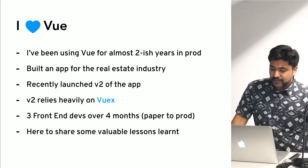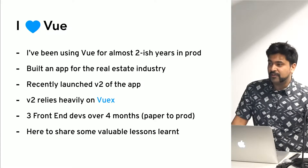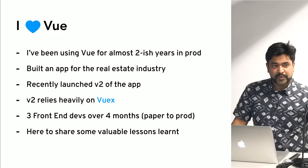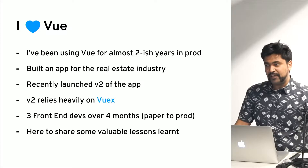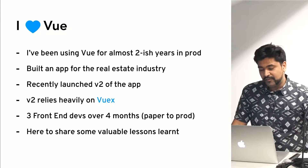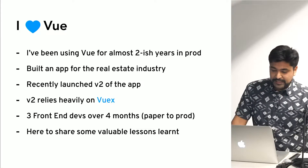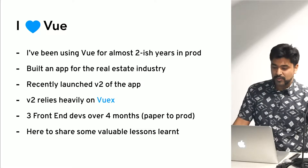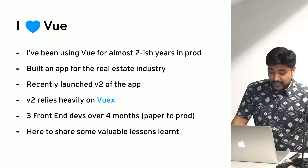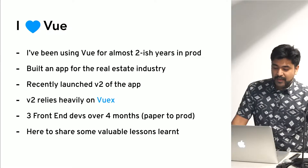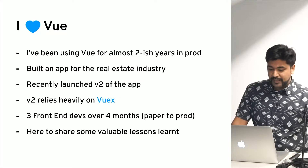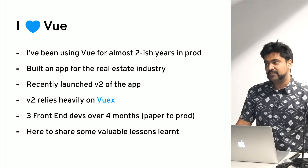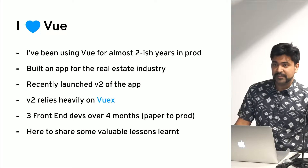I've been using Vue for about two-ish years in production. Over the last two years, we've built two large versions of an application for the real estate industry. We've recently launched the second version of the app that relies heavily on Vuex. We had about three front-end devs working over a four-month timeline to get this to production. I'm really just here to highlight some of the problems we faced, how we solved them, and the lessons we've learned.